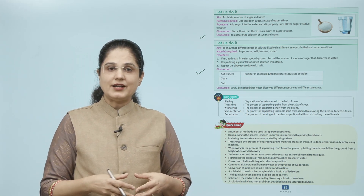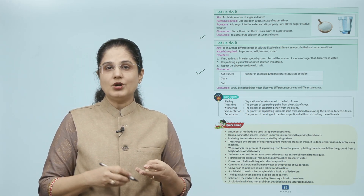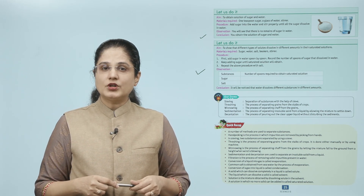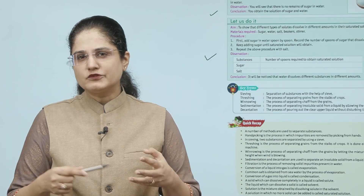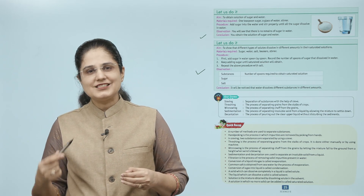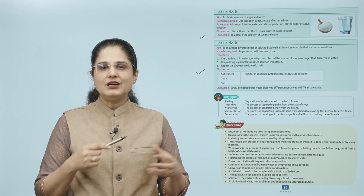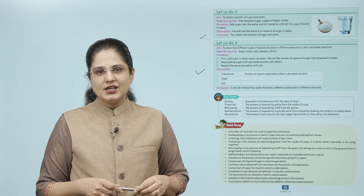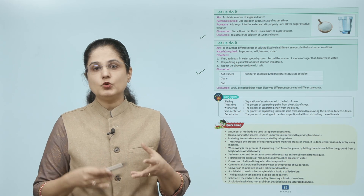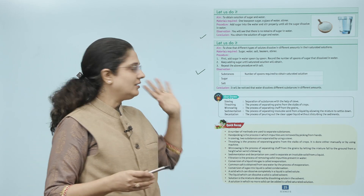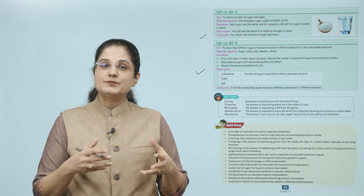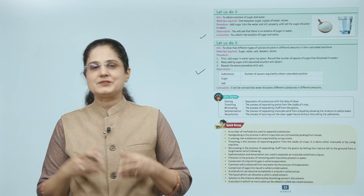Let us do it. Aim: to show that different types of solutes dissolve in different amounts in their saturated solutions. Materials required: sugar, water, salt, beakers, and stirrer. Procedure: add sugar to water spoon by spoon; record the number of spoons that dissolved; keep adding until a saturated solution is obtained; then repeat with salt. Observation: note the number of spoons required for each. Conclusion: water dissolves different substances in different amounts.